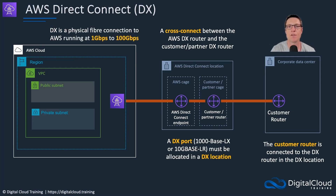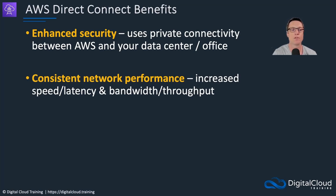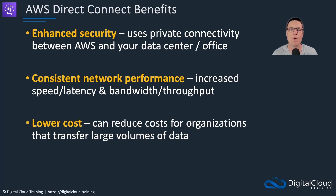A Direct Connect connection is a physical fiber connection to AWS running at 1 gigabit per second to 100 gigabits per second. You can get lower-speed connections from partners as well. The benefits include enhanced security through private connectivity into AWS, consistent network performance, better speed, lower latency, and higher bandwidth and throughput. Costs can be lower, but it depends on the volume of data and the level of redundancy you need. If you have business-critical applications, you may want multiple DX connections with redundancy, which can get expensive. For large quantities of data, you'll need to calculate whether it's more cost-effective than using internet links.